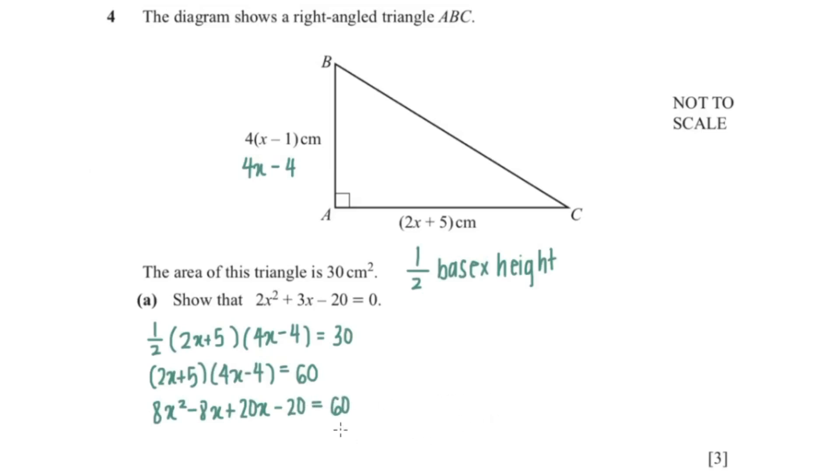Now we're just going to bring 60 to the other side. So that is 8x squared, minus 8 plus 20 is plus 12x, minus 80 equals 0. I'm going to divide the whole thing by 4. So that is 2x squared plus 3x minus 20 equals 0.